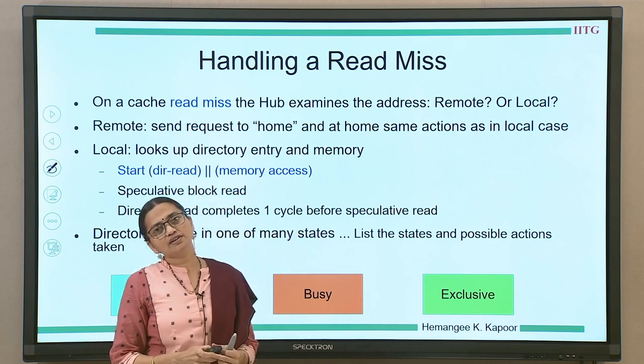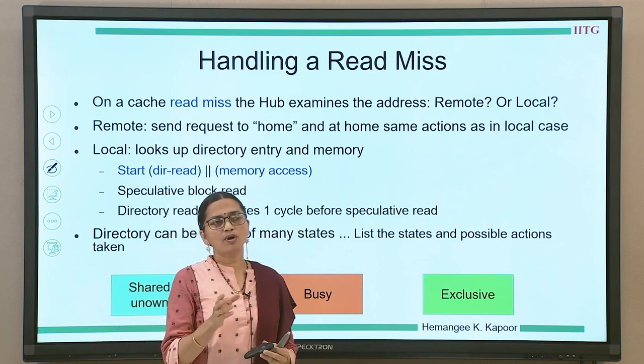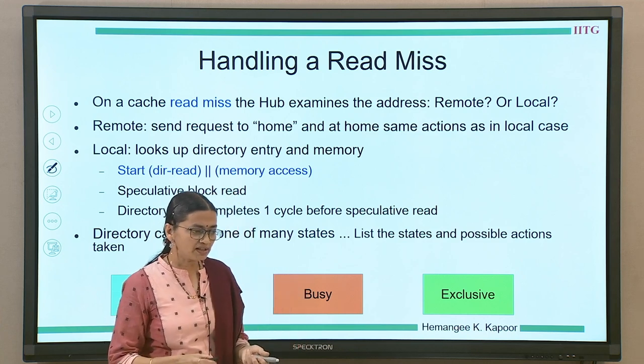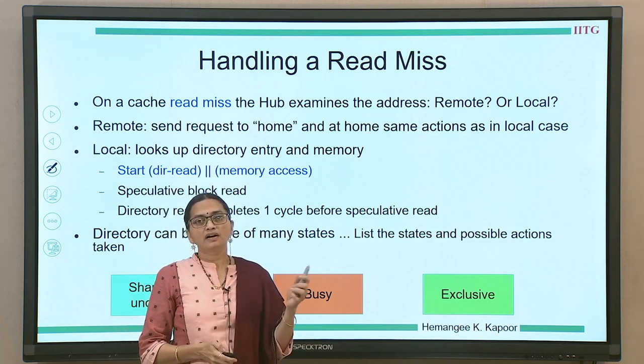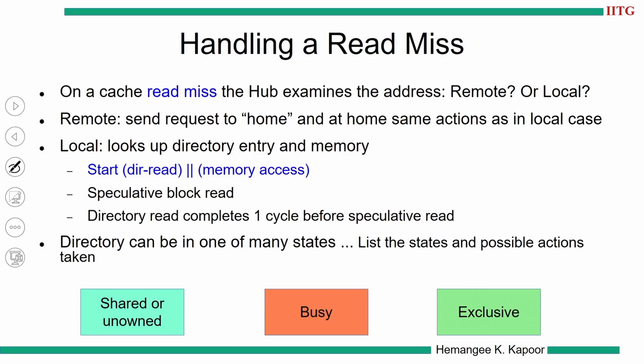Once we do a directory search, we will come to know whether the block is in one of these states. The block could be in an uncached that is unowned state — nobody is sharing this block — or the block could be exclusive with some node, or the directory could be in a busy state. We need to handle these three cases: either the block is unowned or shared, the block is exclusive with one particular node, or the directory says it is busy handling some other request.